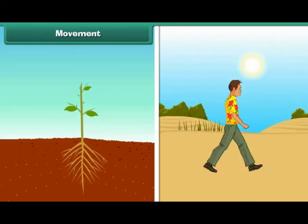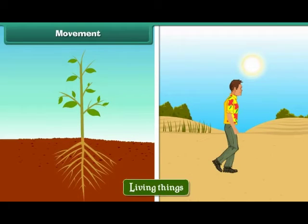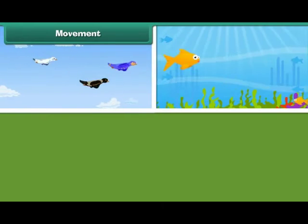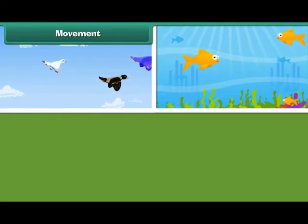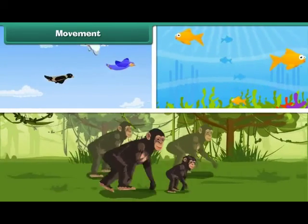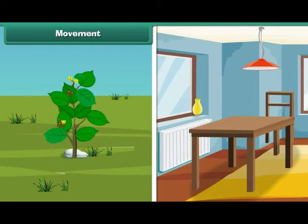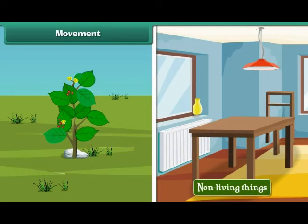Living things show movement. Birds fly in air, fish swims in water, and animals run. Plants are an exception — though living, they cannot move from one place to another. Non-living things, on the other hand, do not show any movement by themselves.